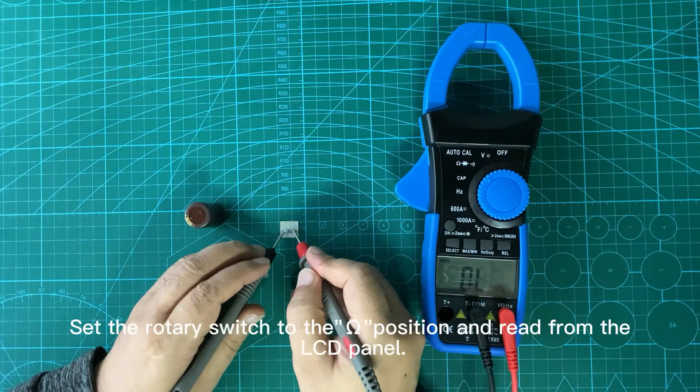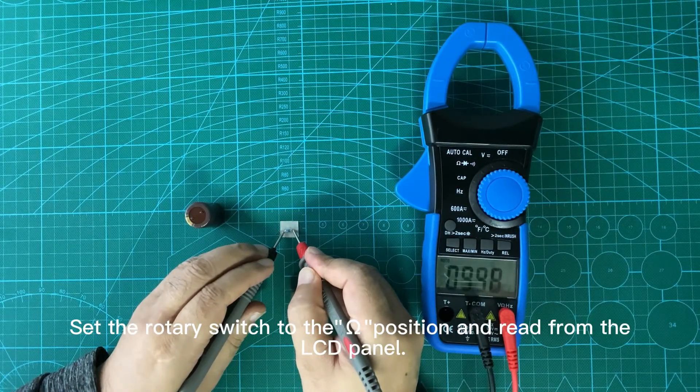Resistance measurement: Set the rotary switch to the omega position and read from the LCD panel.